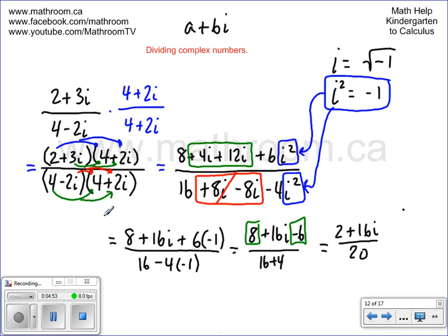So 2 plus 16i over 20. We need to put this in a plus bi form. We can separate that into two small fractions. We can make that 2 over 20 plus 16i over 20.